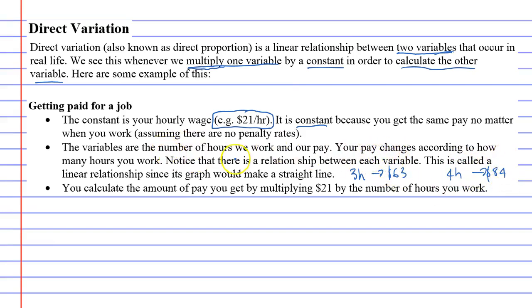Notice that there's a relationship between each variable. There's a relationship between the hours you work and the pay you get. This is called a linear relationship since its graph would make a straight line.